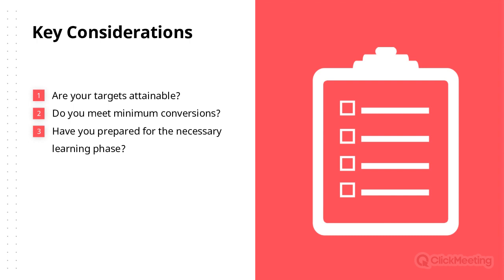Secondly, do you meet the minimum number of conversions? There are a minimum number of conversions required — about 20 per month at the bare minimum — so that the system can actually make decisions based on proper data. If you do not meet the minimum conversion goal, don't fret. There is an opportunity to use micro conversions. If you are a retailer, maybe someone who adds to cart as well as a purchase can be used to make that final number high enough.